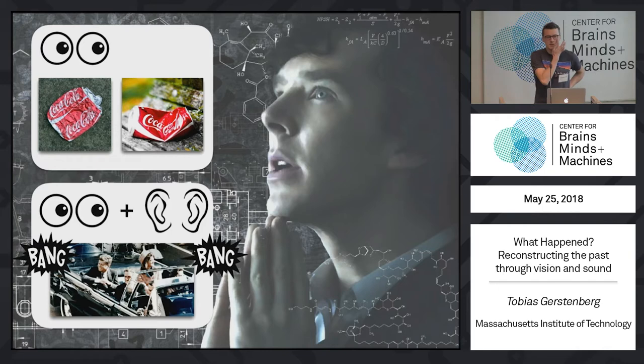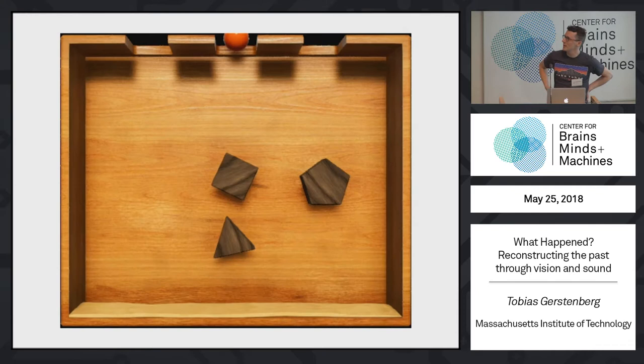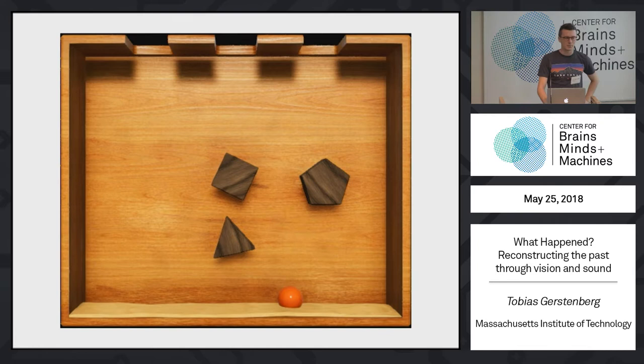So we wanted to study this, people's ability to integrate both visual and auditory information in order to figure out what happened. And in order to do so, we designed this model of a Plinko machine. And I'm just going to show you that machine in action. So that's going to be a ball dropping, and it's going to make some sounds as it collides with the different objects.